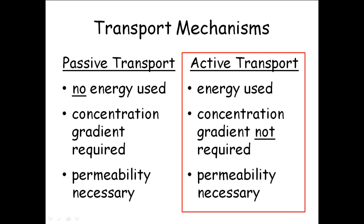In active transport, it's got to be permeable to the substance, but you don't have to have a concentration gradient. The concentration could be the same, and the cell will still actively pump that stuff in or pump it out. A concentration gradient is not required for active transport. It is required for passive, because that's basically you've got a bunch of the stuff here, it's bumping into each other, it knocks it into the cell.